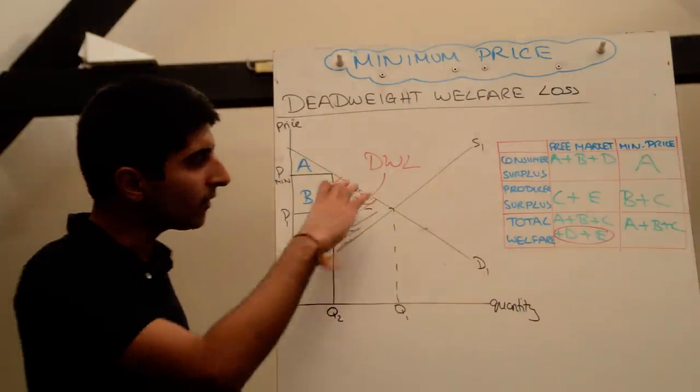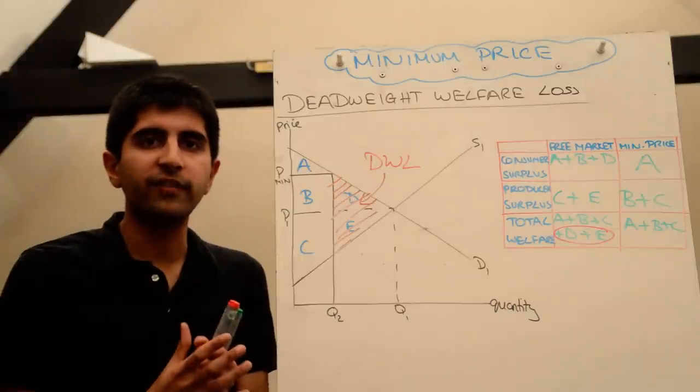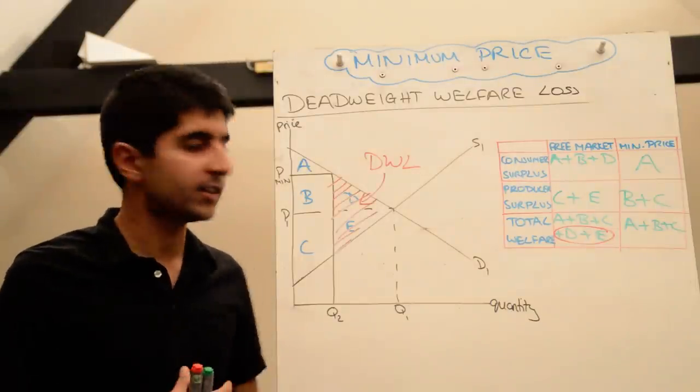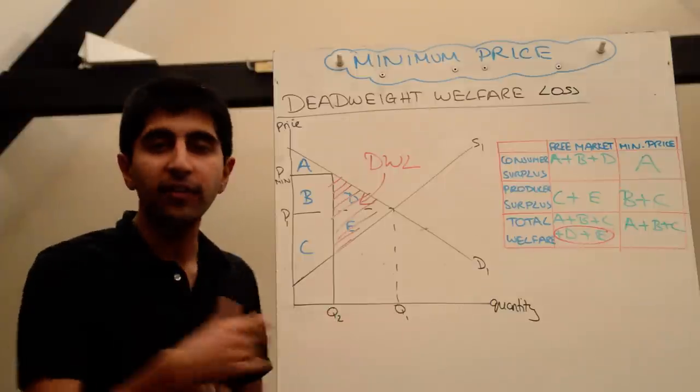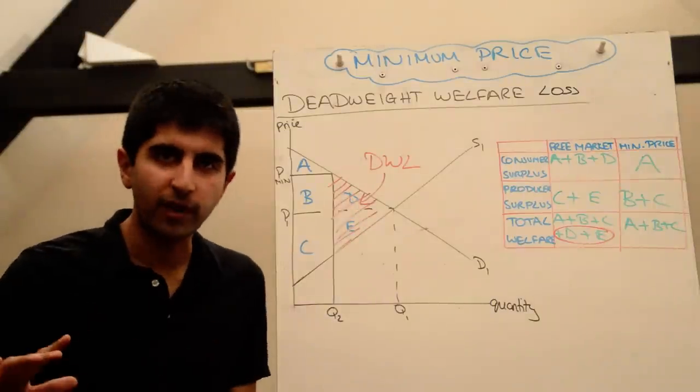So bear that all in mind, that triangle is the deadweight loss which represents a loss of welfare to society which otherwise actually created some benefit. So these are trades that have been forgone, that were beneficial to society, which are now not recovered in any way. They are gone forever.